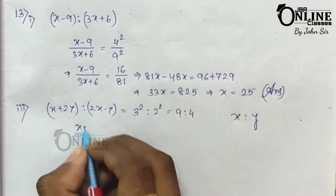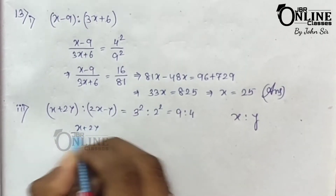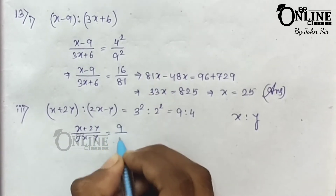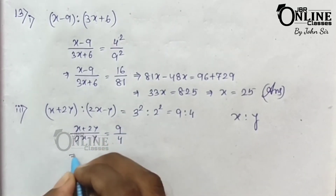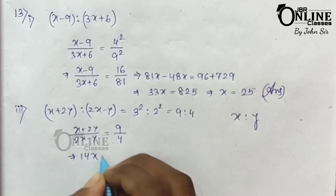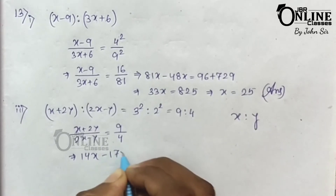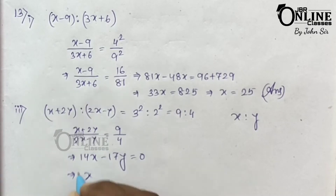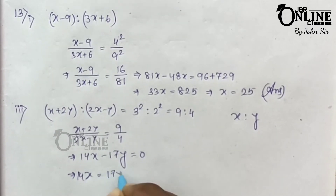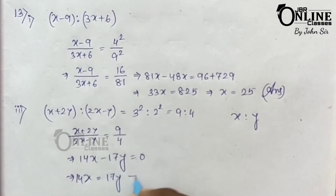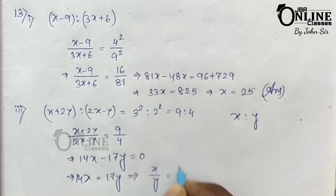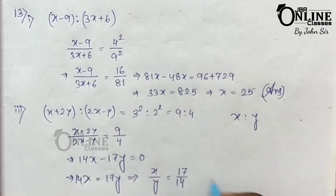Write down x plus 2y by 2x minus y equals 9 by 4. Cross multiply and you will get 14x minus 17y equals 0, so 14x equals 17y, and from that x by y equals 17 by 14. So the ratio is 17 is to 14.